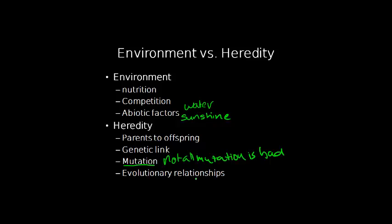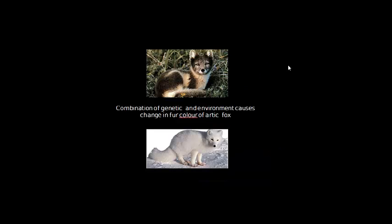Heredity is essential in the study of the relationships of all organisms. Without this understanding of how organisms are related, we have less of an understanding about where we come from as well. Sometimes there is a combination of genetic and environmental causes of variation, such as in the Arctic fox. In summer, its fur is darker in patches and the white isn't as white. In winter, the fur is much whiter. The colour of the fur is a genetic link; however, it is the extreme cold that brings about this changing fur colour. So both environment and genetics play a part in the fur colour of the Arctic fox.